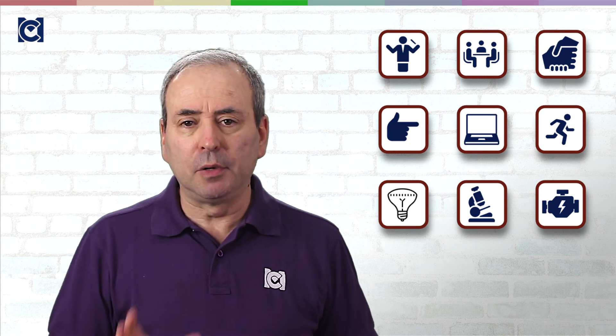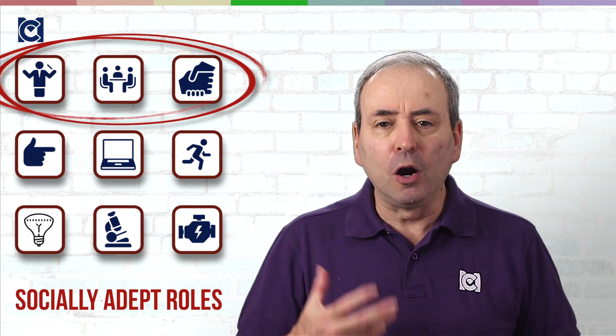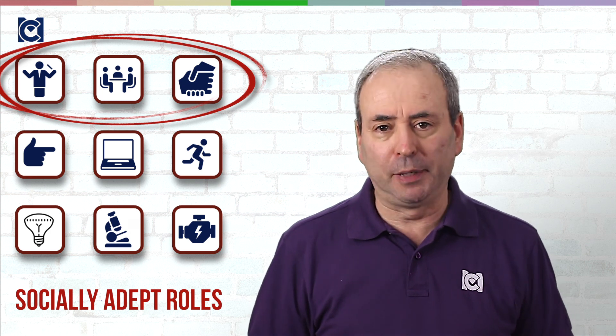Over the years Belbin has modified the names of the roles, but I'm going to use the names that are currently in use. Three of the roles are socially adept, that is, they are favored by people who are good at relationships and enjoy working with people.